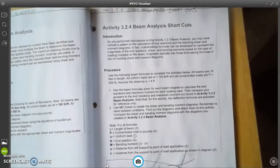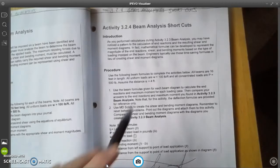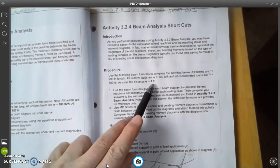So the procedure: we're going to use the following beam formulas to complete the activities below. All beams are 16 feet in length, all uniform loads are w equals 100 pounds per foot, and all concentrated loads are p equals 500 pounds. We're going to assume that the letter a is equal to 4 feet.